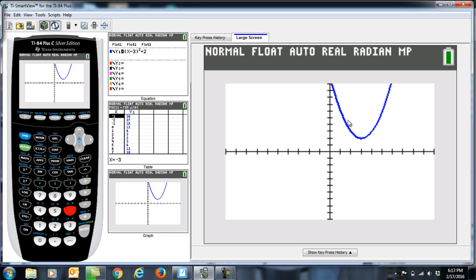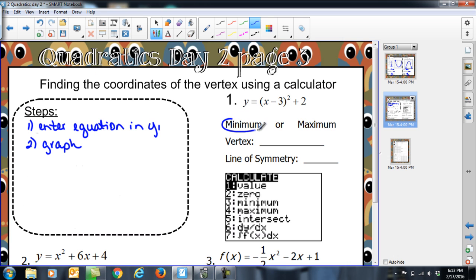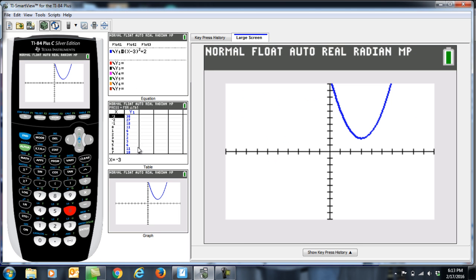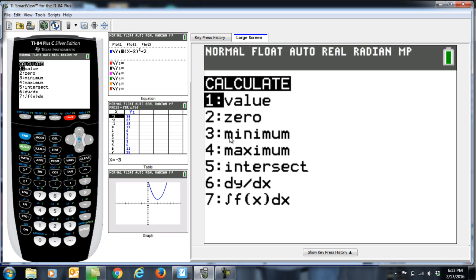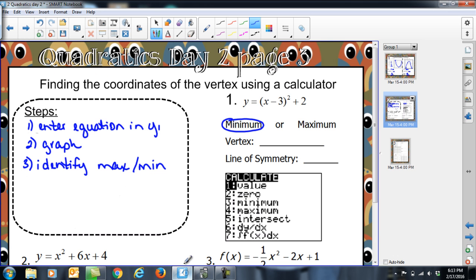There is my parabola, and I can clearly see the vertex here. It's concave up. This vertex happens to be a minimum at the bottom of the parabola. Number three, identify if it's a max or a min. This is a minimum, so I'm going to go to second trace. We're going to do second trace number three, which is your minimum.